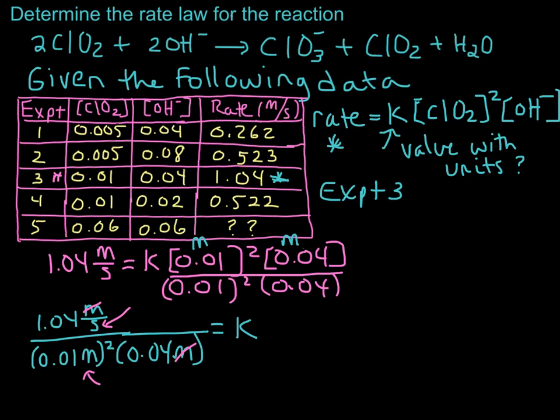Okay, so let's run everything through the calculator, and when we do that, we are going to end up with 1.04, 1 over seconds. That's going to be divided by 4 times 10 to the negative 6 molar squared, and that's equal to K.